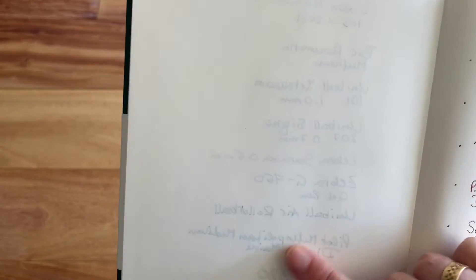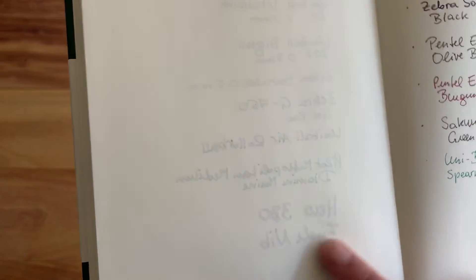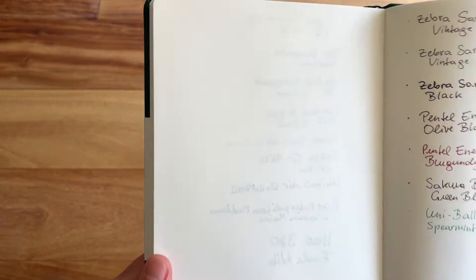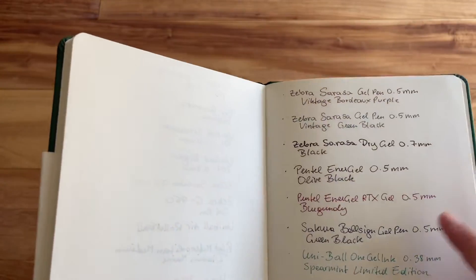There is some ghosting here, but there is no bleed through, even with the thick nib. So if you don't mind the ghosting, it is fantastic paper to write on because it is super smooth, super slick. As I said, it reminds me of Clairefontaine and Rhodia paper. So I really love the way the paper feels.